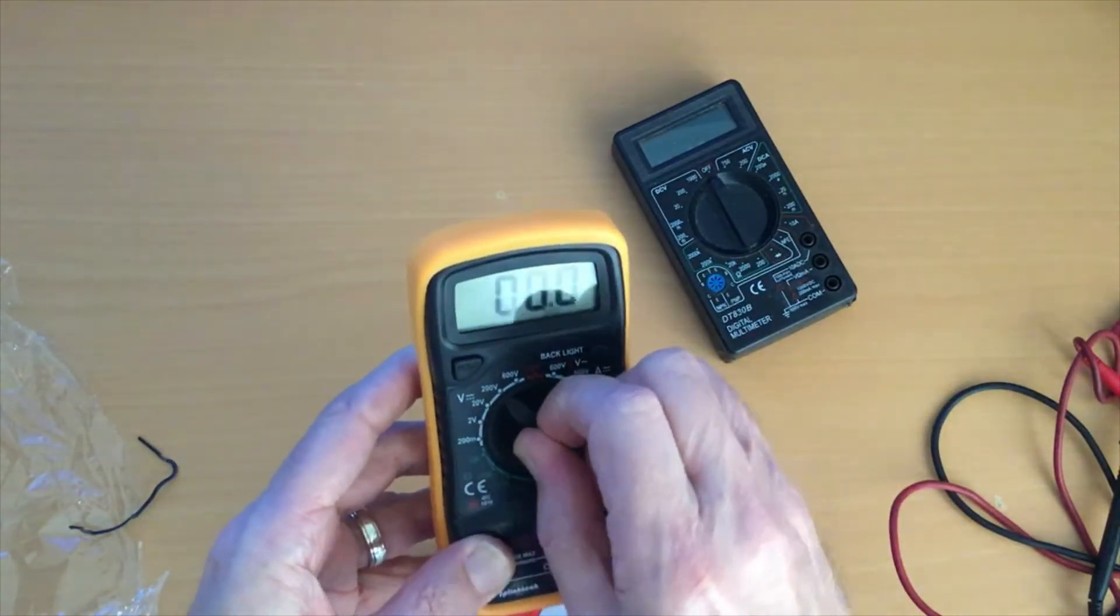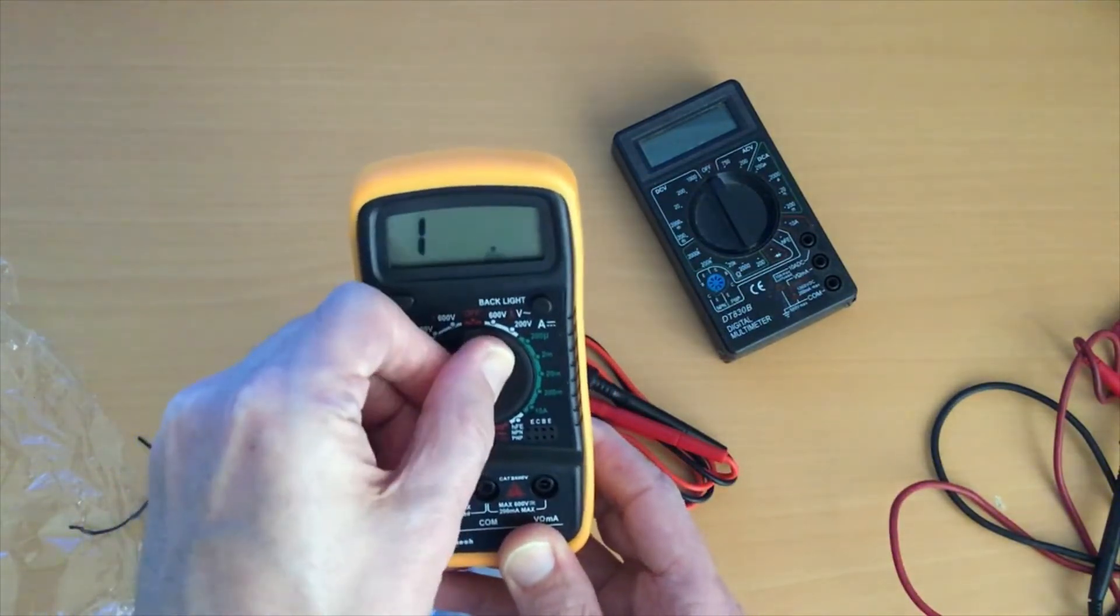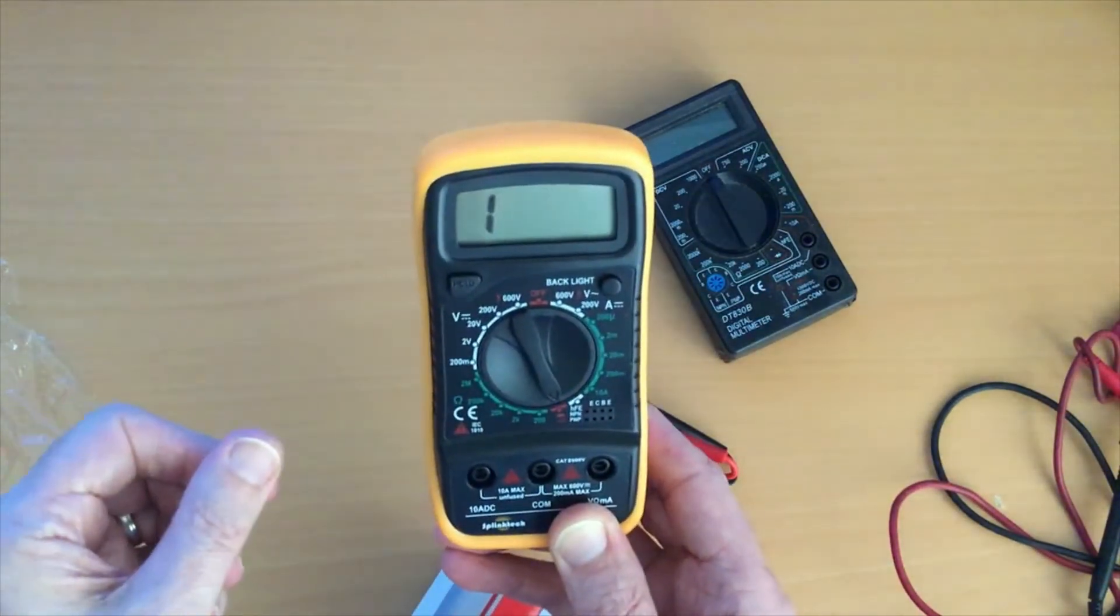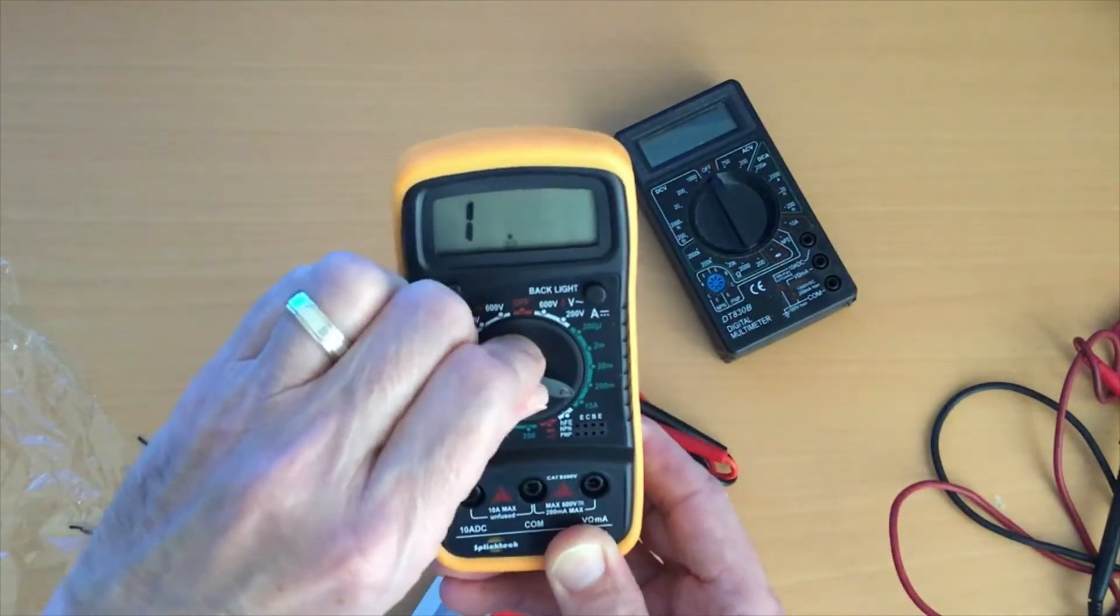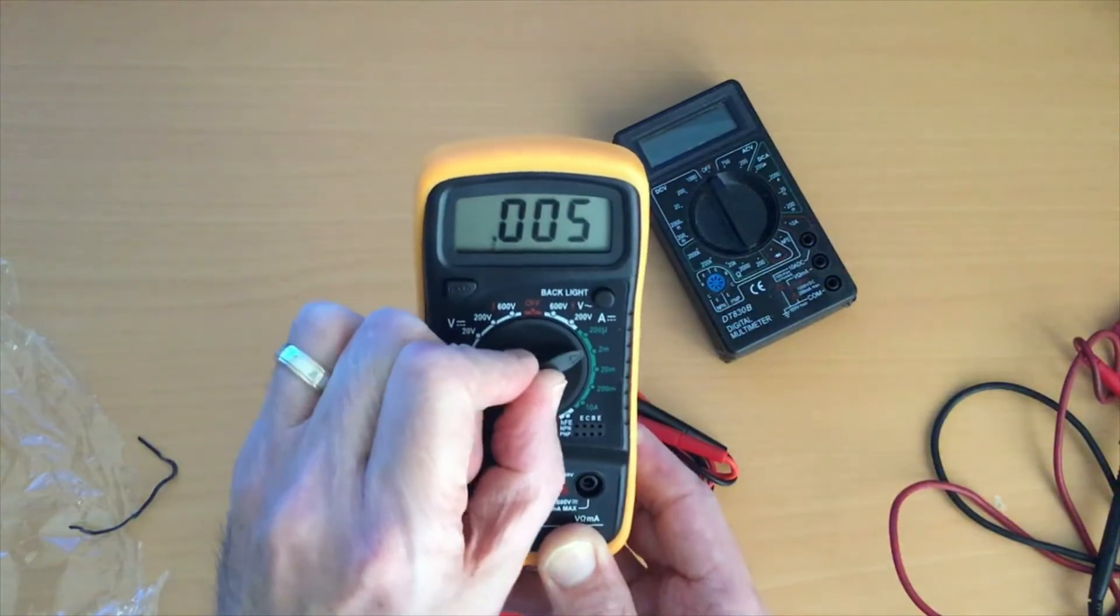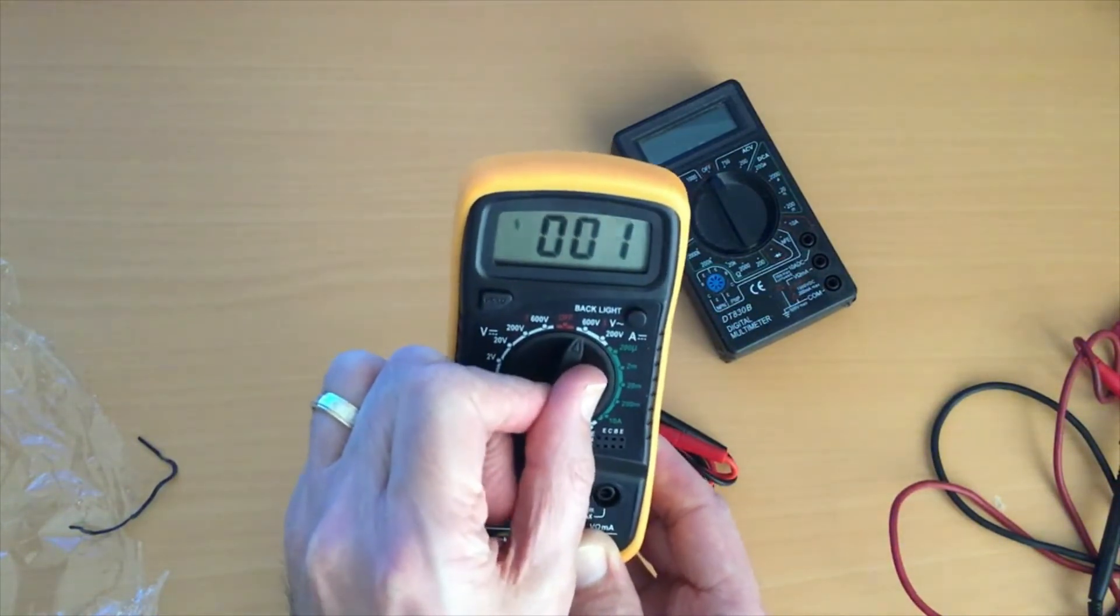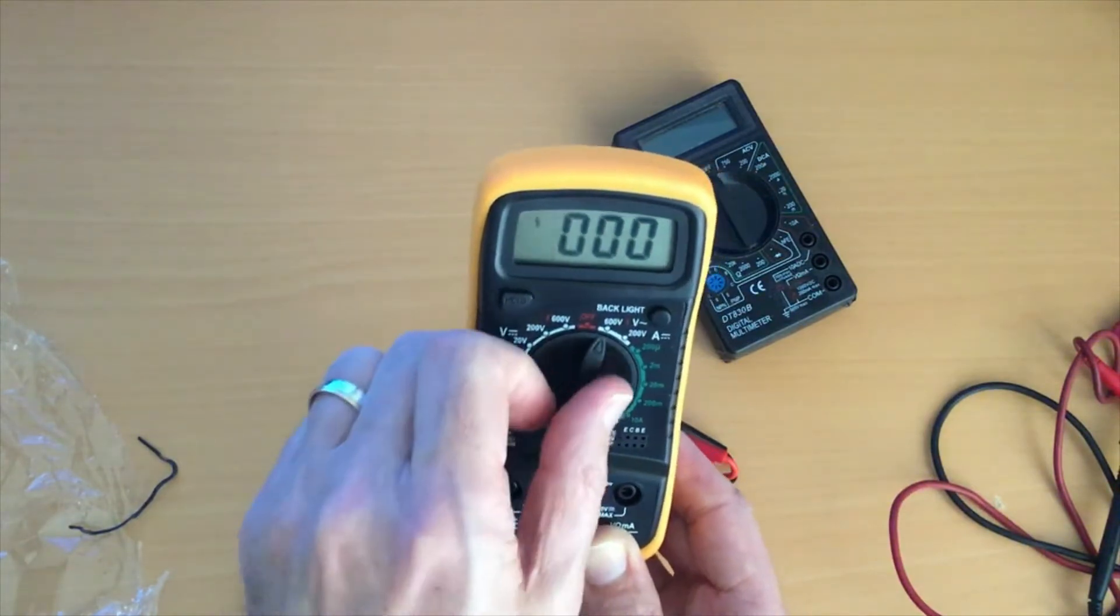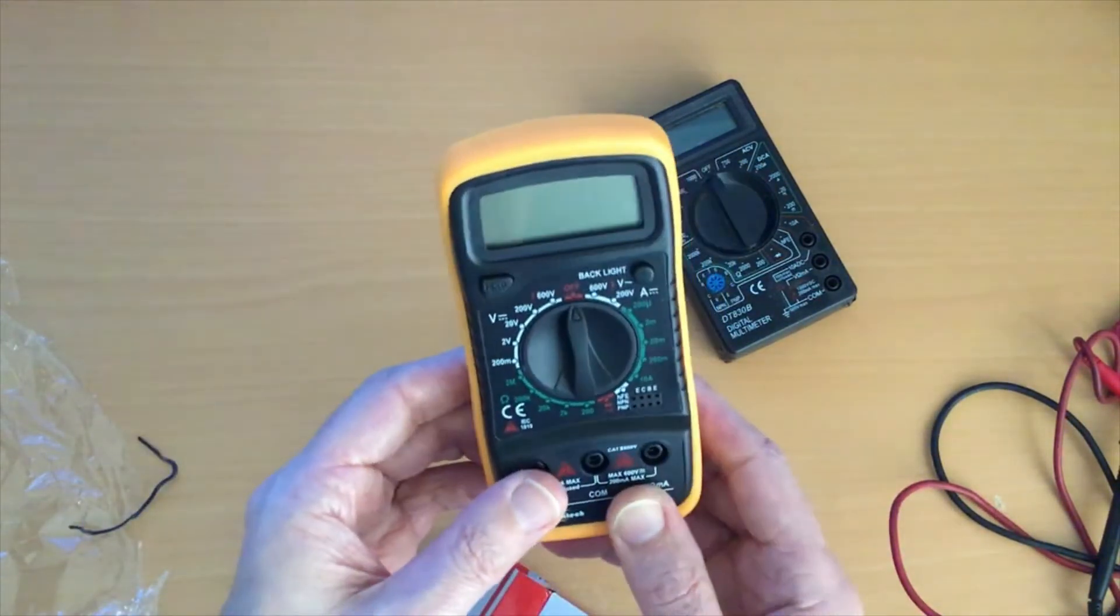Two ohms around here, so resistance setting, the bleeping continuity one, and then your amp, your current settings around here. And then you've got the high voltage AC up at the top there and back to off.